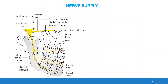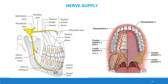Nerve supply. The upper lip is supplied by the infraorbital nerve. The upper gingiva is supplied by the anterior, posterior, and middle superior alveolar branches of the maxillary nerve. The lower gingiva is supplied by the inferior alveolar branch of the mandibular nerve. The lower lip is supplied by the mental nerve and buccal branch of the mandibular nerve. The hard palate is supplied by the greater palatine and nasopalatine branches of the maxillary nerve. The soft palate is supplied by the lesser palatine branch of the maxillary nerve and the tonsillar branch of the glossopharyngeal nerve. The cheek is supplied by the infraorbital and superior alveolar branches of the maxillary nerve.